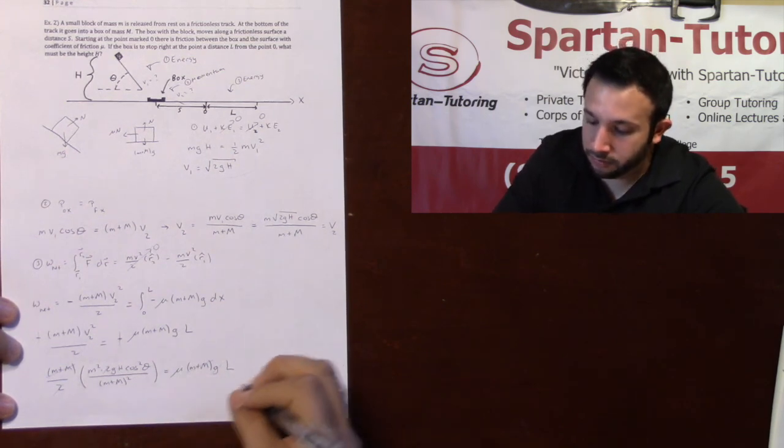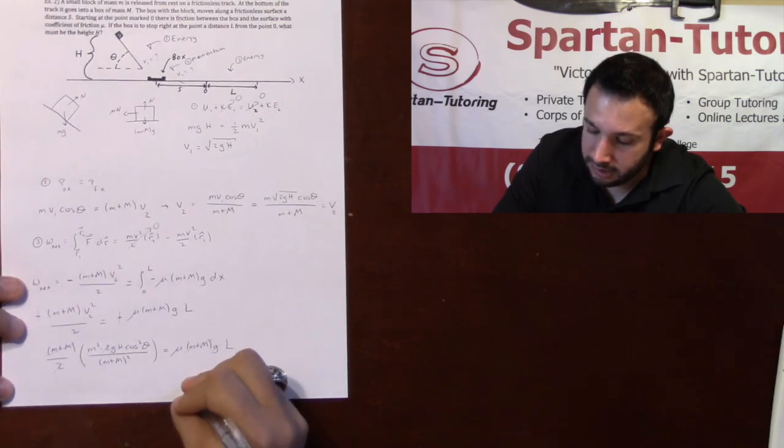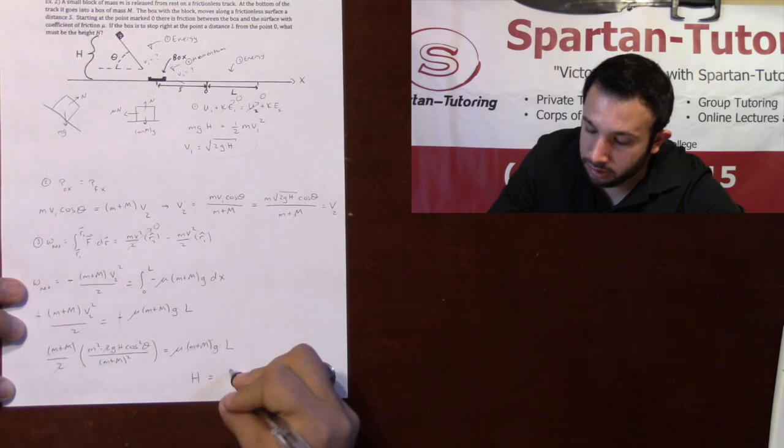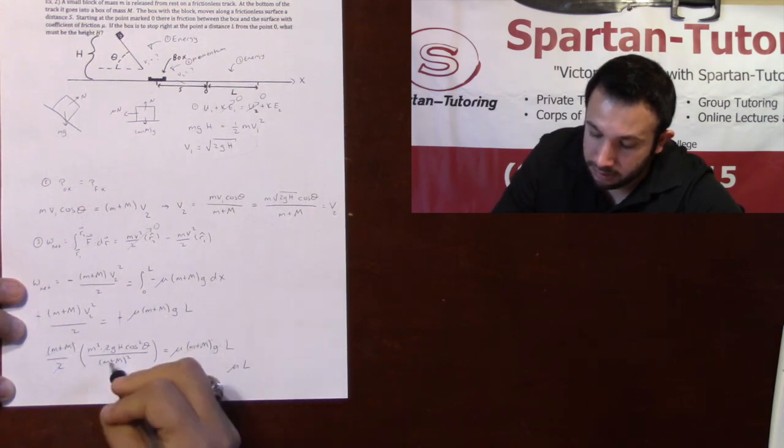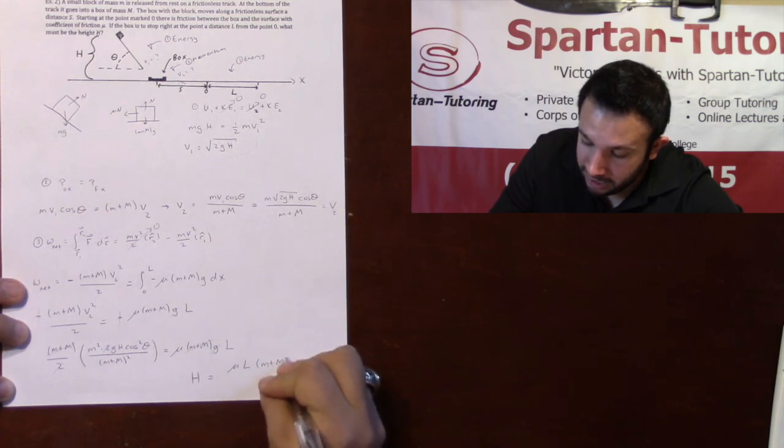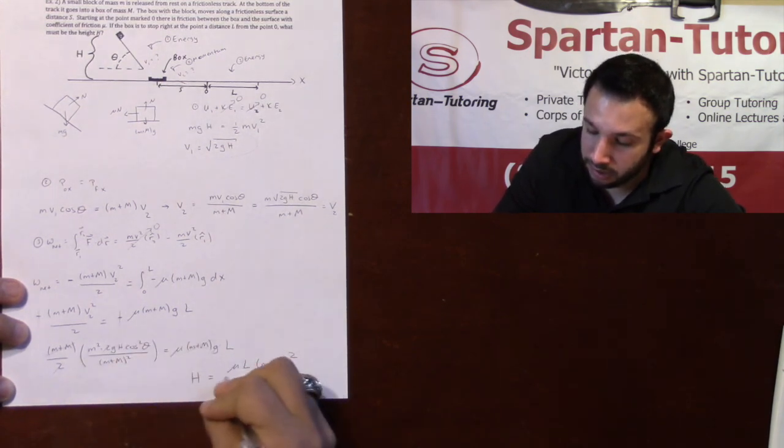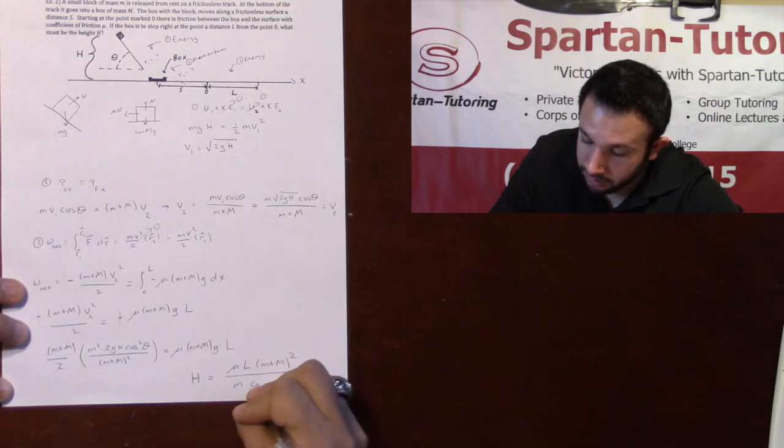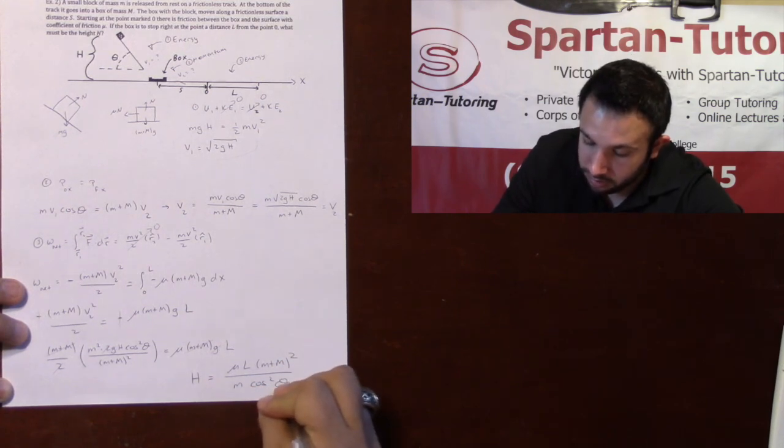And now just do that algebra to solve for H. You should get that H is equal to, let's see, my numerator, I'll have a mu times L. I'll also have a little m plus capital M squared. And then my denominator will have a little m and we'll have a cosine squared theta.